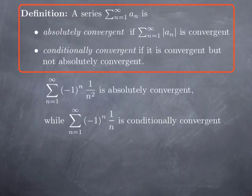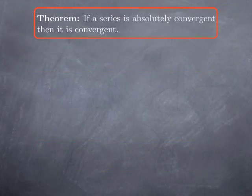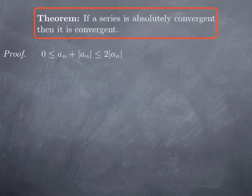The name 'absolutely convergent' suggests it's a stronger way of converging, and indeed that is the case: if a series is absolutely convergent then it is in particular convergent. To prove this, we observe that a_n + |a_n| is between 0 and 2|a_n|.